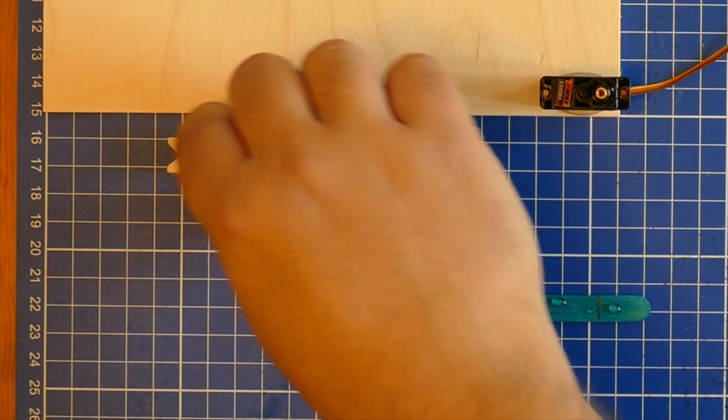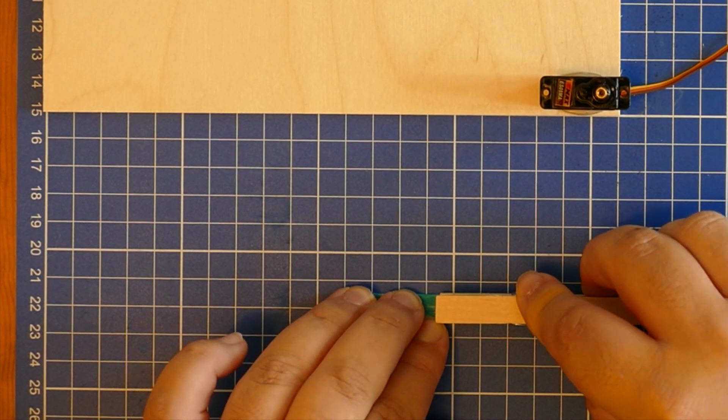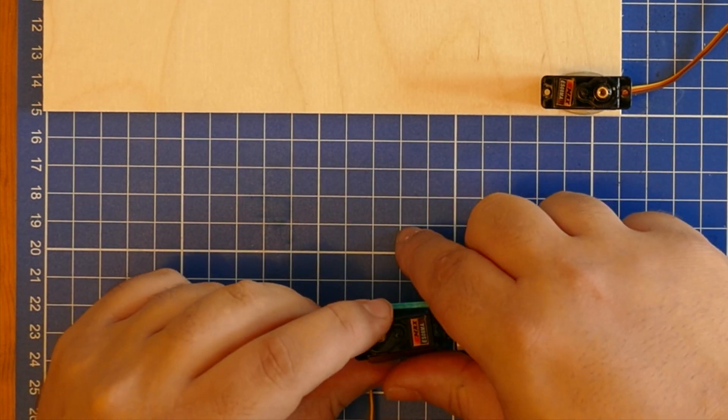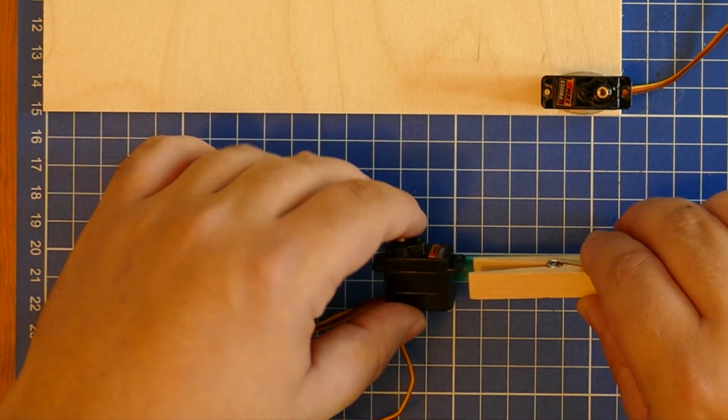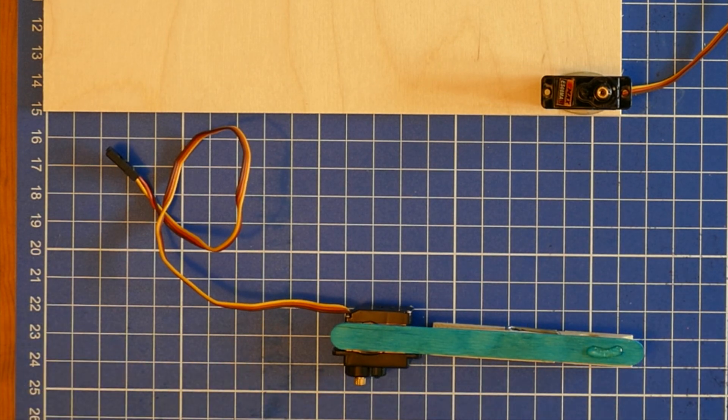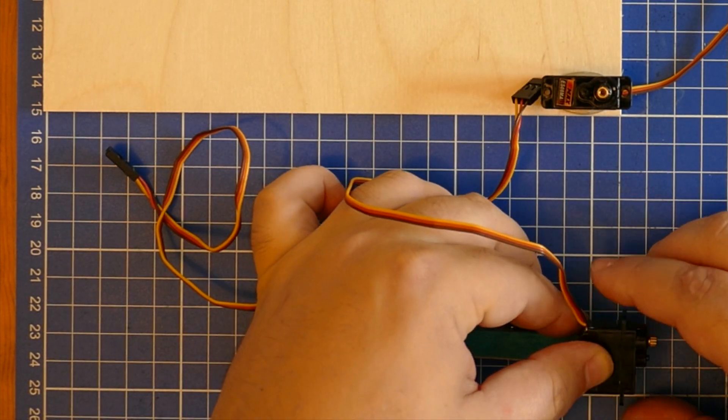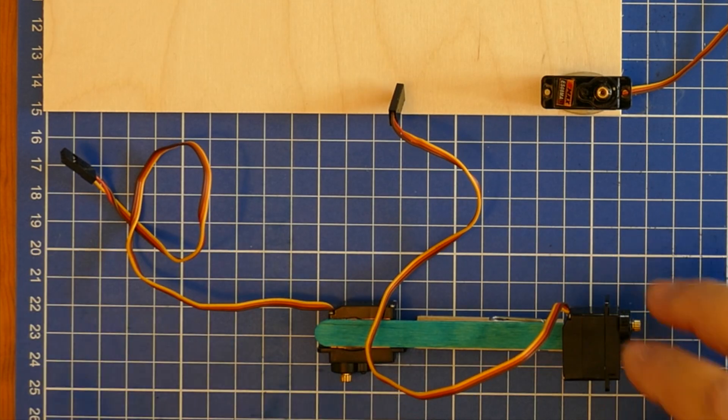For the lower part of the arm, first glue a clothes peg at one end to hold the pen. Now glue one of the servos directly to the lolly stick at the other end. Finally glue a servo to the other side of the clothes peg end. This allows the pen to be raised and lowered depending on whether or not the brachiograph should be drawing.